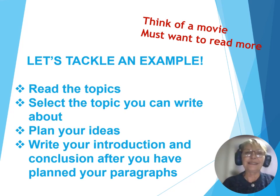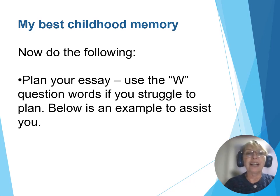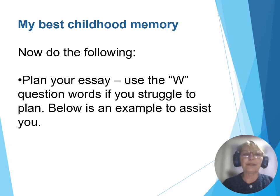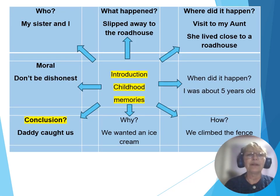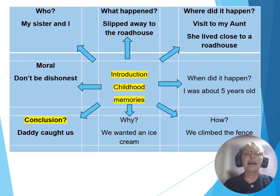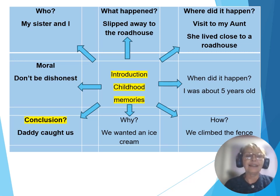Let's have a look at the topic: 'My Best Childhood Memory.' If you struggle to think of ideas, try using the W question words and 'how.' Here is a simple mind map. The introduction is about childhood memories — who was involved, what happened, where did it happen, when, how did the event take place, why did it happen, and there's usually a moral involved as well. And then, of course, we have the conclusion.